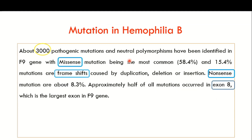Just like hemophilia A, there are mutations in the F9 gene in hemophilia B that are responsible for the deficiency of factor 9. About 3,000 pathogenic mutations and neutral polymorphisms have been identified in the F9 gene. The most common mutation seen in hemophilia B is the missense mutation, accounting for about 58.4 percent of cases. About 15.4 percent of hemophilia B cases are due to frameshift mutations in the F9 gene.